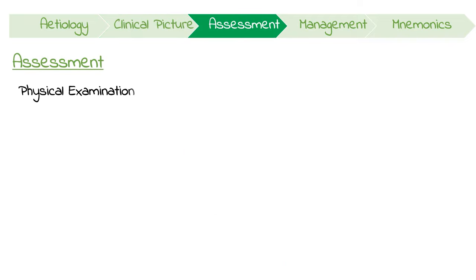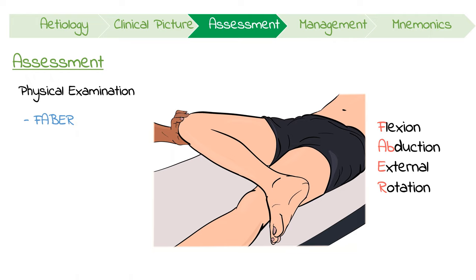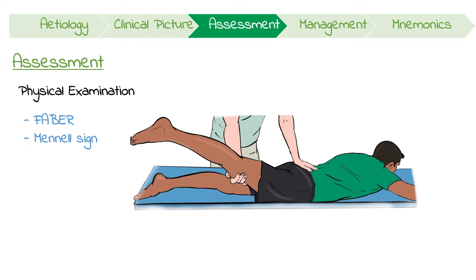Other than a good history, one physical examination to perform is the Faber test. This is positive when pain in the sacroiliac joint occurs on flexion, abduction, and external rotation. Another is the Menel sign, which is positive when there's tenderness to palpation of the sacroiliac joint when it is displaced.